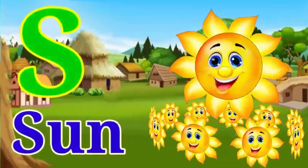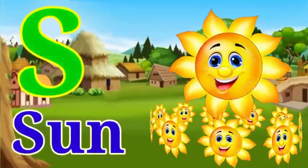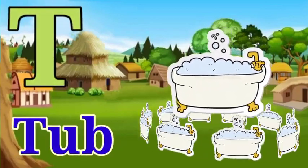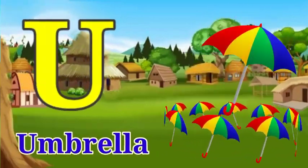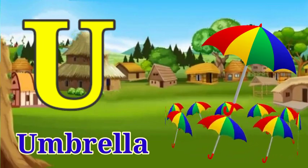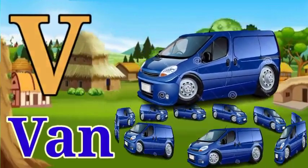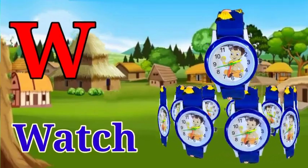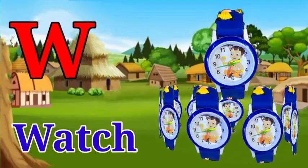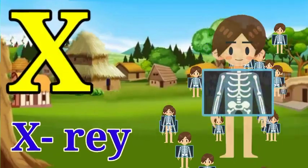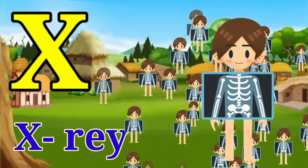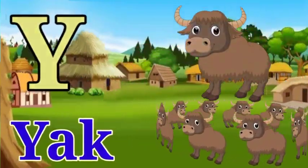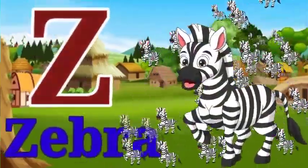S for sun. T for tub. U for umbrella. V for wand. W for watch. X for x-ray. Y for yak. Z for zebra.